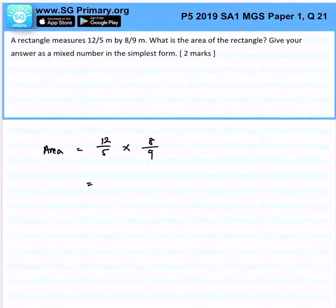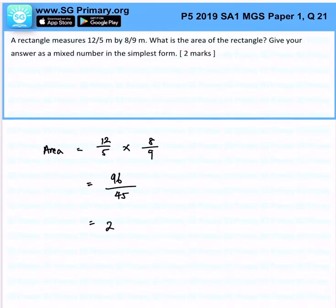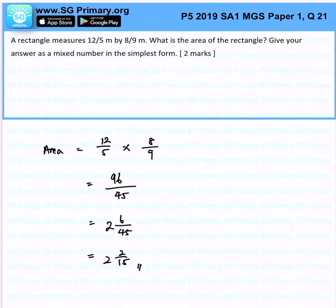We take numerator times numerator, which gives 96, and denominator times denominator, which gives 45. Expressing this as a mixed number, we get 2 and 6/45, and after simplifying, we get 2 and 2/15. That is the answer for this question.